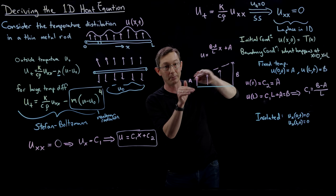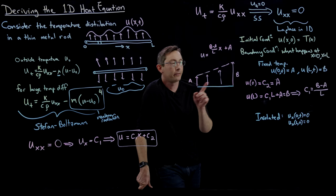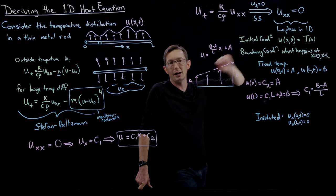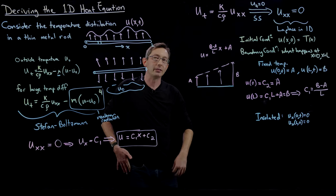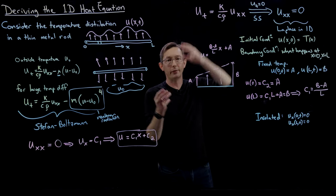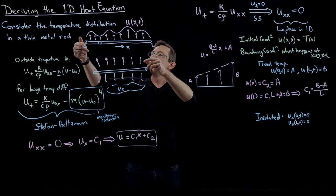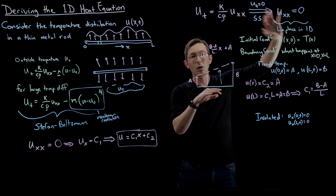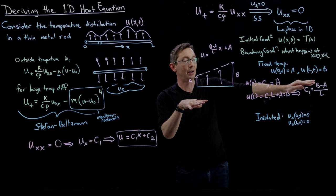Notice something interesting: for fixed temperatures on the end caps, the initial temperature distribution is completely irrelevant to the final steady-state distribution. Think of it this way: you start with some initial temperature distribution, fix the end caps at a and b, and the diffusion equation evolves over time, averaging out the initial temperature. After infinite time, there's no memory of the initial temperature distribution — it's entirely determined by the boundary conditions.